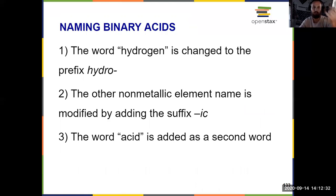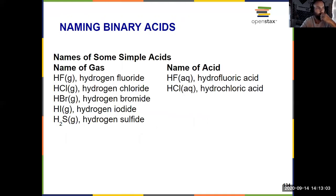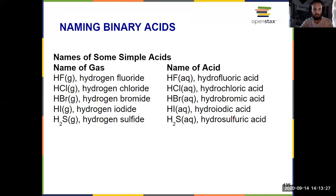This is the last entry on your list: ionic compounds, with subsets for transition metals and polyatomics; molecules; and now acids. For a binary acid, instead of naming it like a molecule, we change hydrogen at the beginning to hydro, add -ic on the end of the other element, and then say acid at the end. For example, HF as a gas is hydrogen fluoride, but as an acid in aqueous solution it's hydrofluoric acid. You've probably heard of hydrochloric acid. Pause the video to practice the remaining examples.